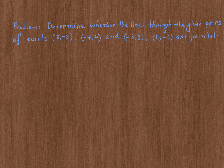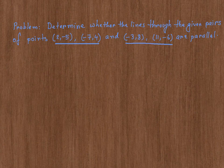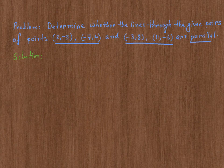In this video, we are going to determine whether the lines through a given pair of points are parallel to each other. So this is the first pair of points and this is the second pair of points. Now before I solve the problem, let me give you a little bit of theory behind the problem.